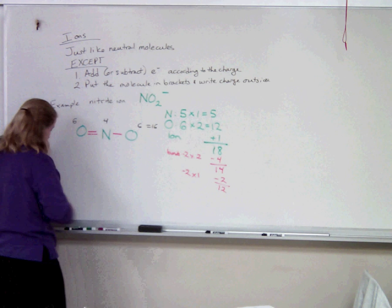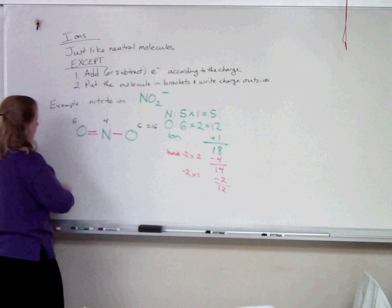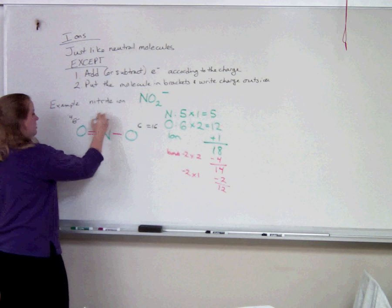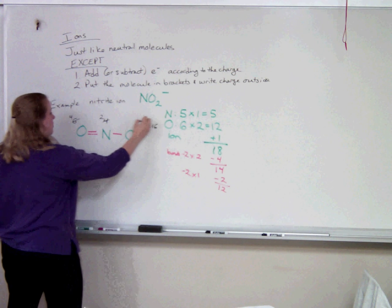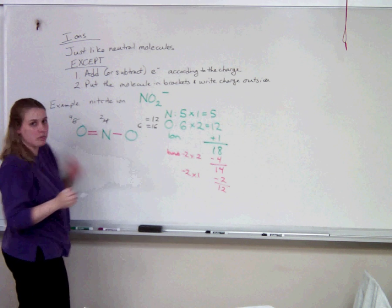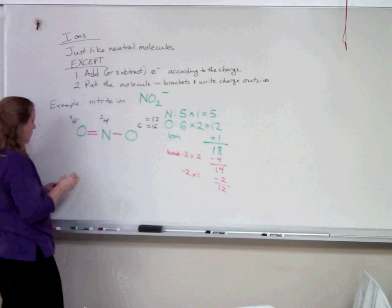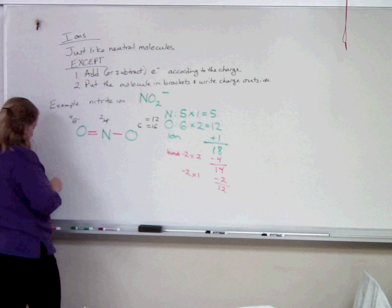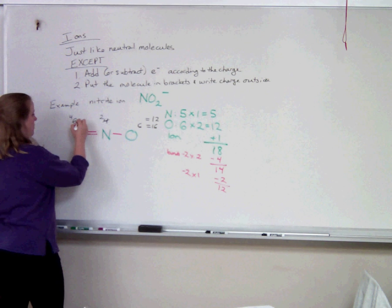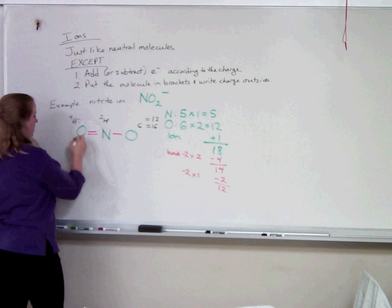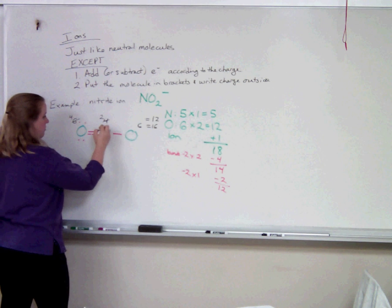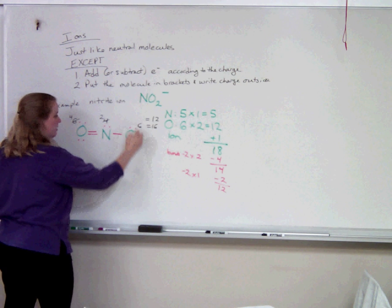Recount. Now this one needs 4, this one needs 2, for a total of 12. And we have 12, so now we can put our electrons on. This atom gets 4, this one gets 2, and this one gets 6.